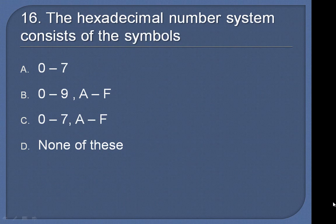Question 16: The hexadecimal number system consists of the symbols: 0 to 7, 0 to 9 A to F, 0 to 7 A to F, or none of these?